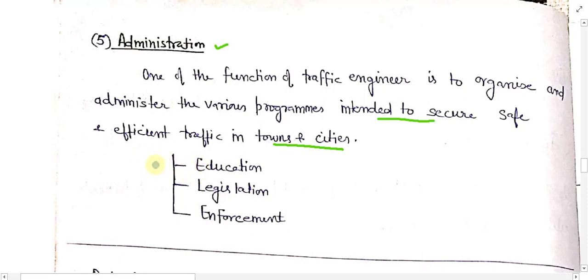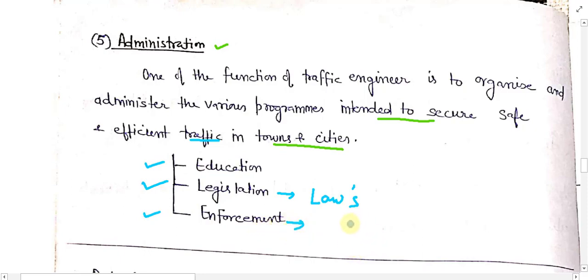Broadly there are three types of work under administration. The first is education — the traffic engineer provides awareness programs so that road users understand the importance of safe and efficient traffic. The second is legislation — providing good laws and regulations. The third is enforcement, which is very important: every law is a good one if enforcement is done properly. These are the three sub-activities under the fifth work.